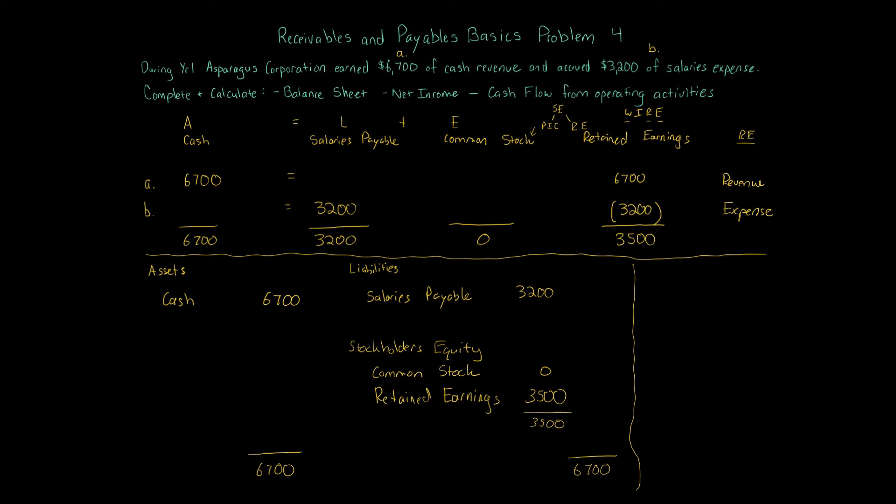Now we have to do the net income calculation and then the cash flow from operating activities. So net income is easy here. We just have the two revenue and expense amounts. So to calculate or do our income statement, remember, net income is just the income statement, which is the revenue minus expenses. Our revenue here is $6,700 minus expenses, $3,200 gives us $3,500. So that is the net income, net income of $3,500.